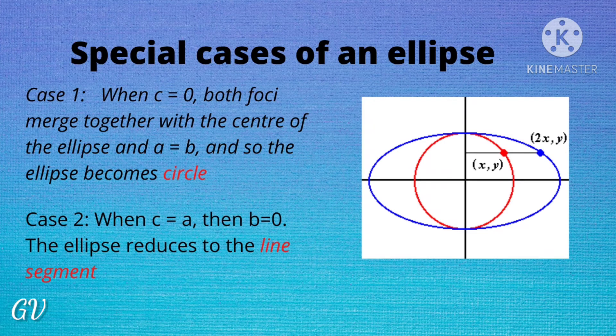Special cases of an ellipse: Case 1 — when c equals 0, the center is at the origin and both foci merge together with the center of the ellipse. Then a equals b, and the ellipse reduces to a circle. Case 2 — when c equals a, the center-to-focus distance equals the center-to-vertex distance, and b equals 0, so the ellipse reduces to a line segment.